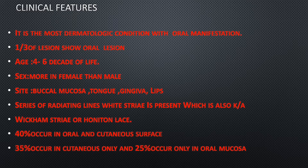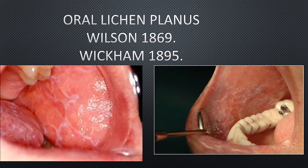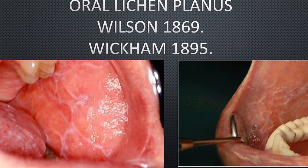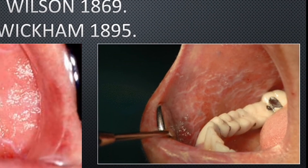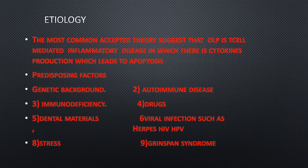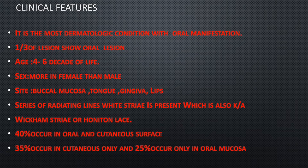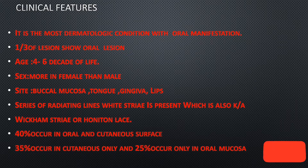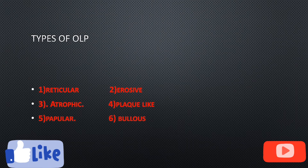A series of radiating white lines called Wickham's striae — also known as honeytoneless — are present in oral lichen planus, as visible in the picture showing these radiating lines. Statistically, 40 percent of cases occur on both oral and cutaneous surfaces, 35 percent occur on cutaneous surfaces only, and 25 percent occur on oral mucosa only.